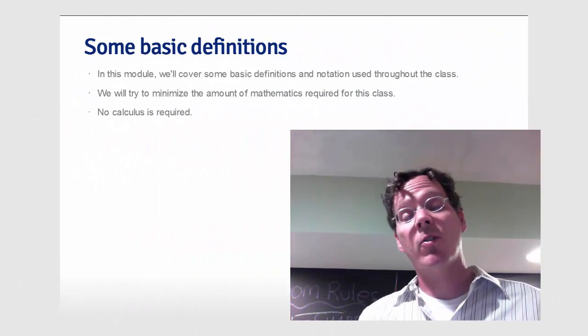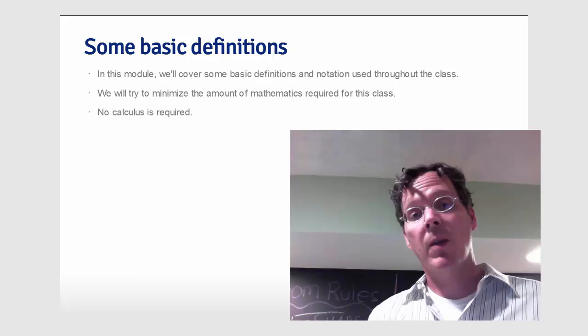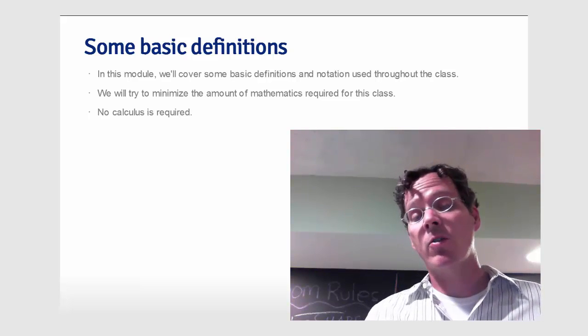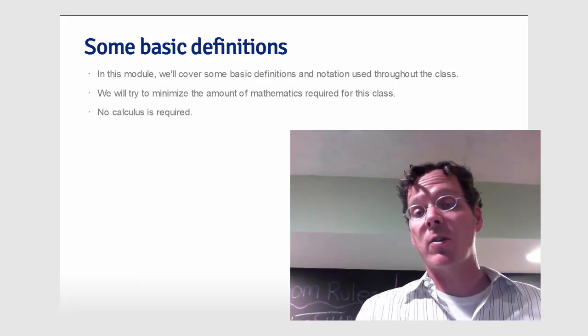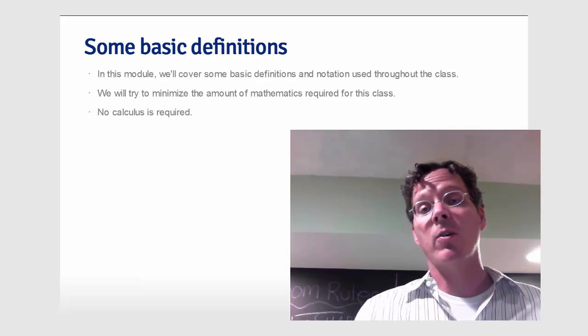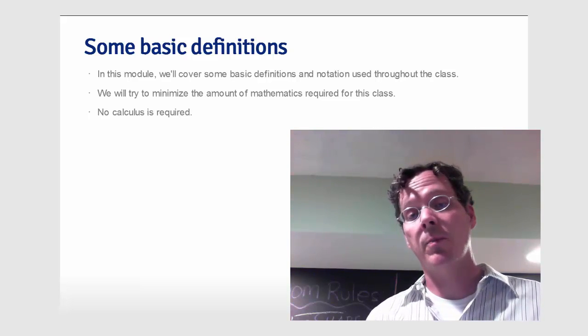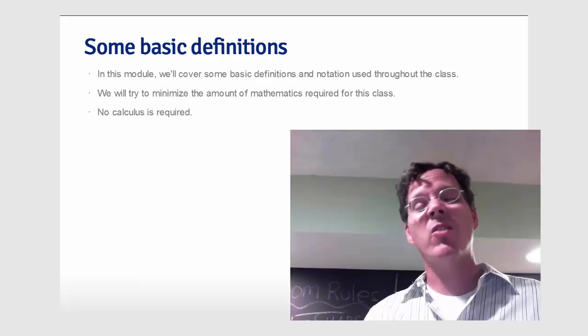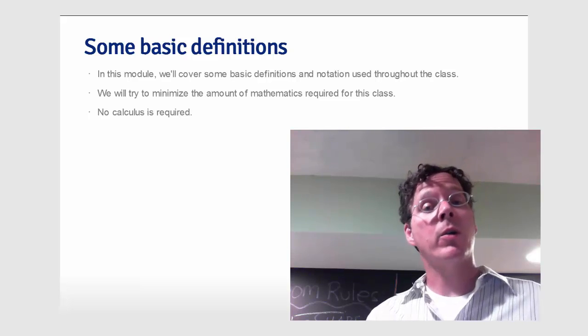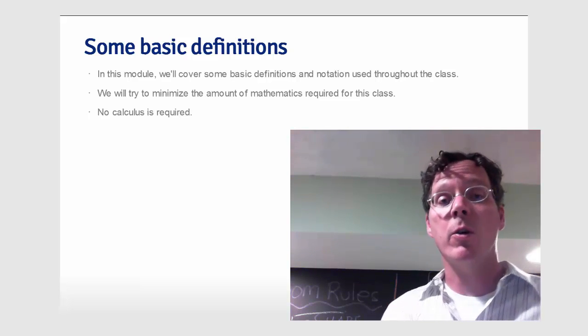In this lecture we're just going to cover some basic definitions. These are things you probably already saw in the prerequisite for this class in the statistical inference part of the Coursera Data Science Specialization. However, because they're so fundamental to regression, we're going to cover them again anyway so they're fresh in our minds.